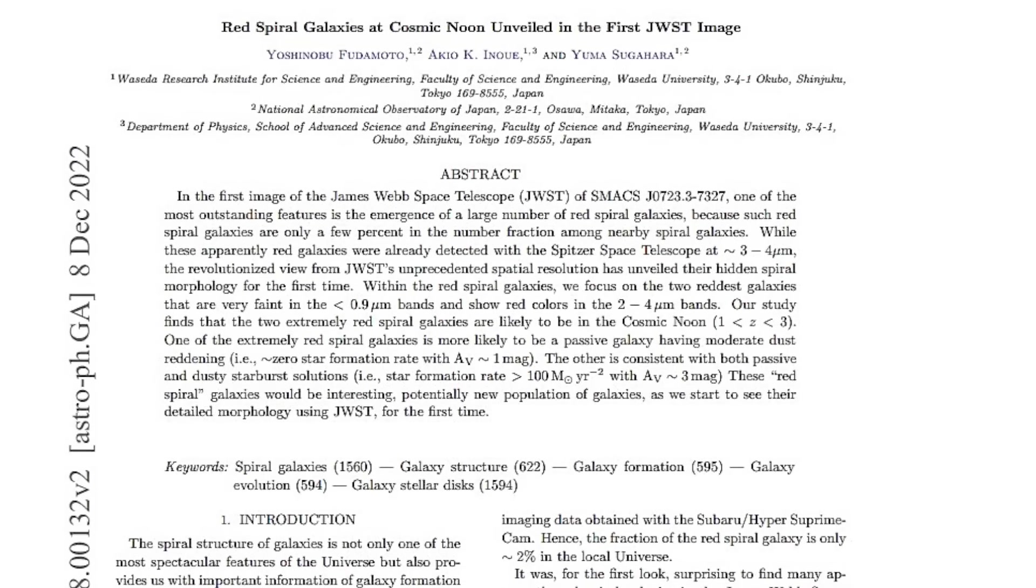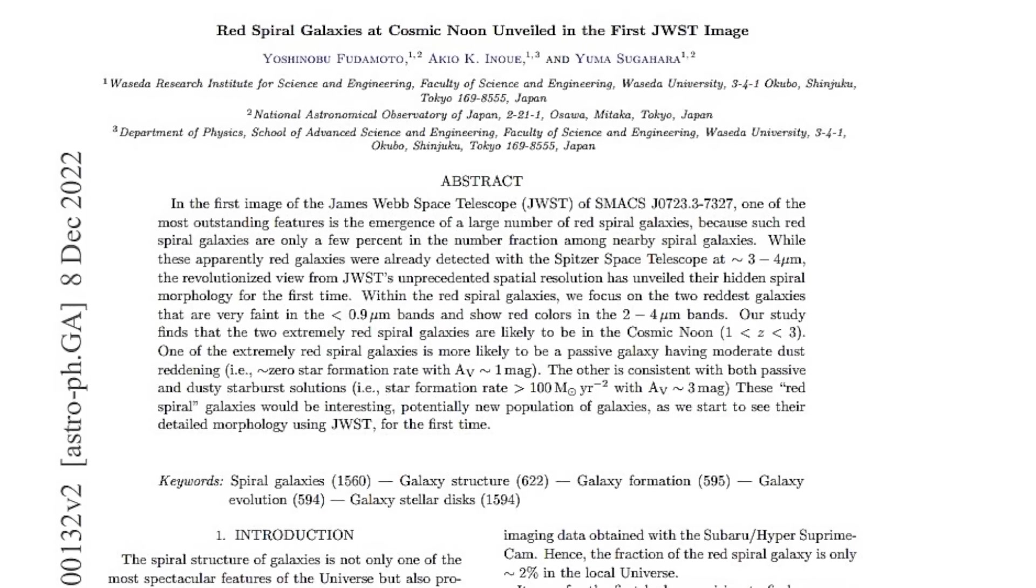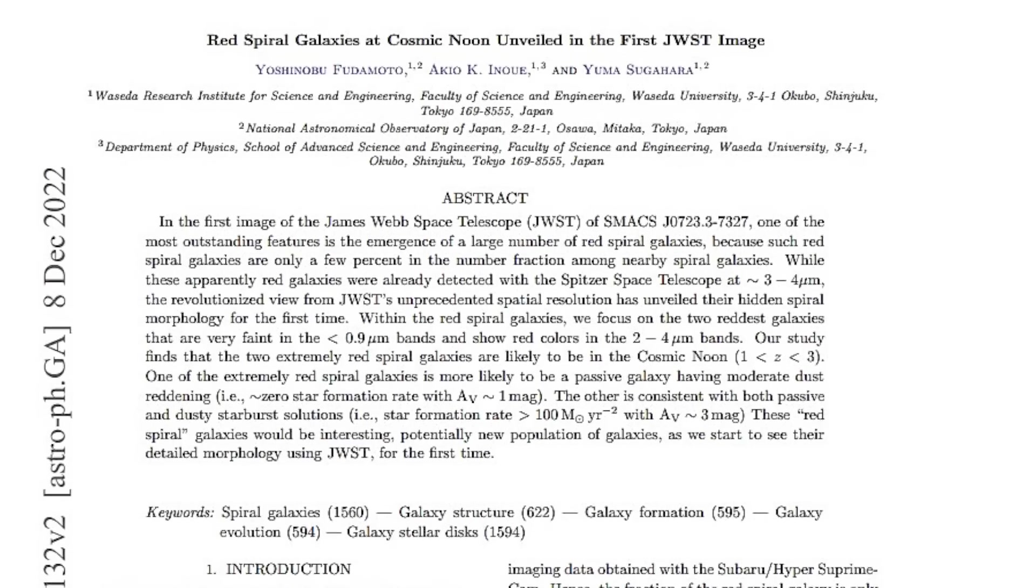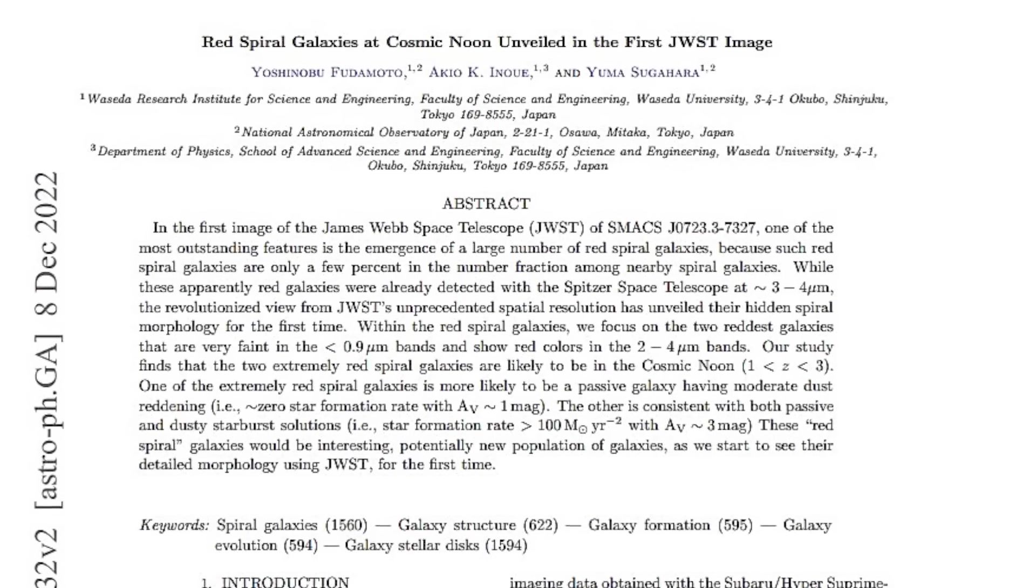Moreover, as several Japanese scientists have shown, some red spiral galaxies with a redshift in the range of 1 to 3 can imitate galaxies with a much higher redshift.